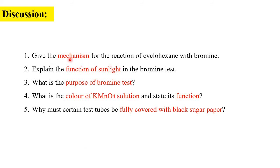For the further discussion: number one, give the mechanism for the reaction of cyclohexane with bromine. You already wrote the equation — now show the mechanism. There are three steps: initiation (one equation), propagation (two equations), and termination (three equations). Please study this before next week when we will discuss it.